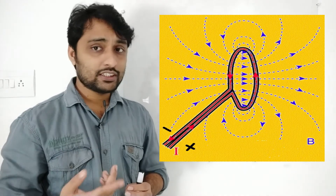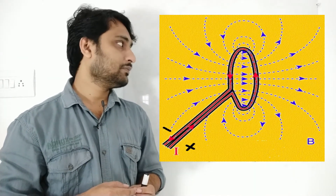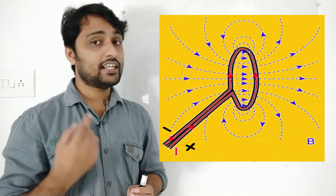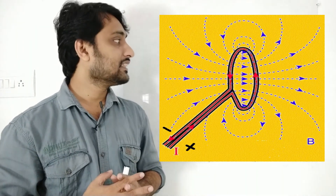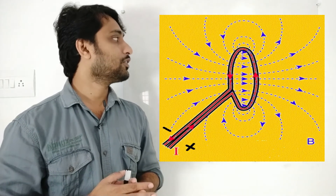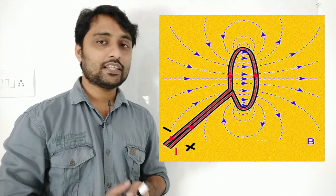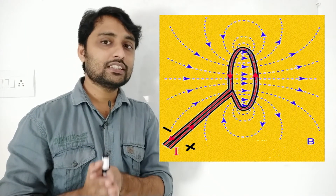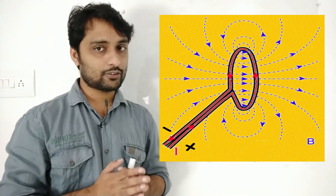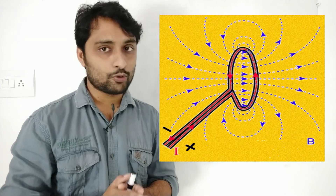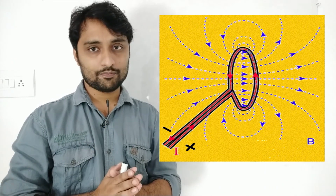So how magnetic lines of force form around a circular looped conductor is similar to a straight conductor, but at each and every point lines are forming, which is why they crowd at the center. Magnetic strength is more at the center of the loop. If radius is increased without changing the current intensity, magnetic lines of force will decrease — radius and magnetic field are inversely proportional. That is all about the magnetic field formed around a circular looped conductor. Thank you.